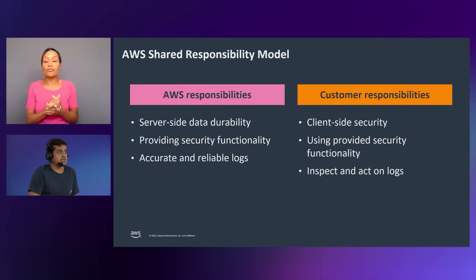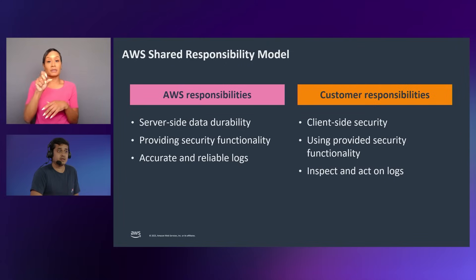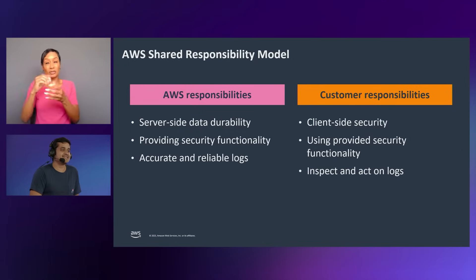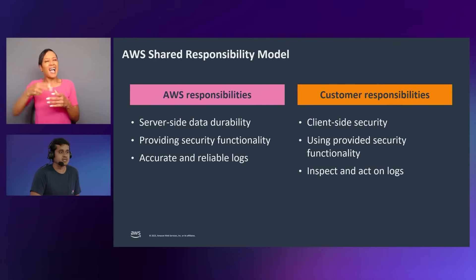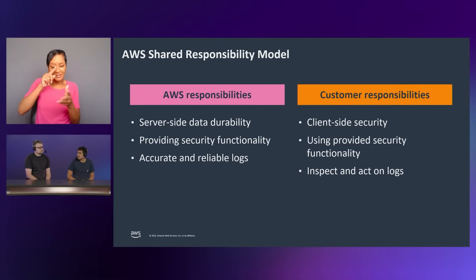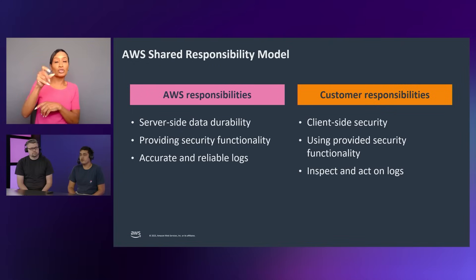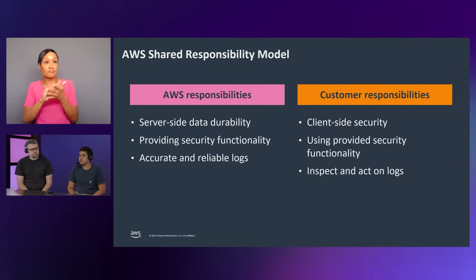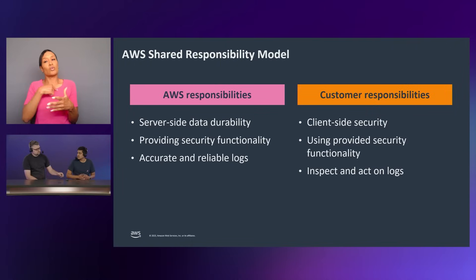To get us started, I'd like to recap the AWS shared responsibility model. Amazon S3 is secure by default and leverages the security of AWS's global infrastructure. S3 is designed to satisfy the security requirements of the military, global banks, and other high-sensitivity organizations. Our infrastructure is monitored 24-7, offers multiple fault isolation capabilities, improves resilience, and allows for encryption of all data flowing across the network before it leaves our secured facilities. We provide the functionality, and we expect customers to use that functionality.